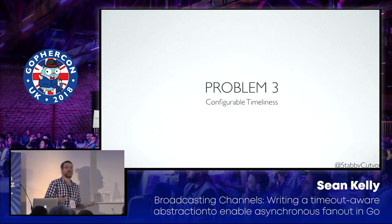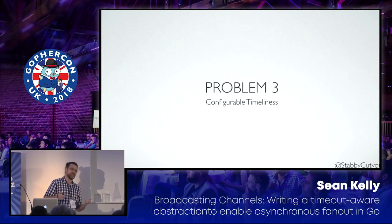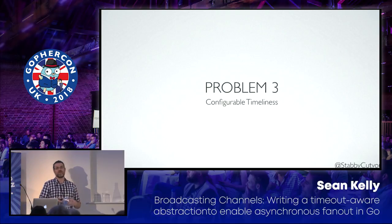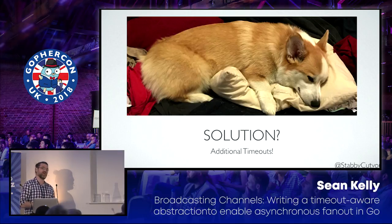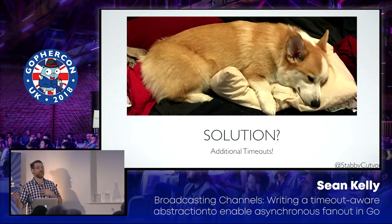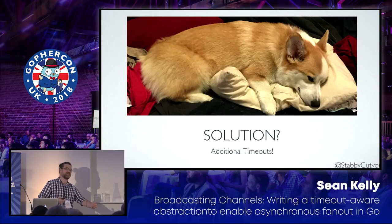But what happens if subscribers don't want that timeout? What if they want every message no matter what, even if it's five hours late? The solution is to let the subscriber provide their own override to the default timeout. The publisher says 'in my opinion, if you get a message later than three seconds it's not worth it,' but the subscriber can say 'I want messages within one second' or 'I want messages within ten seconds.' Both are perfectly valid — you just allow subscribers, once they subscribe, to declare their own expected delivery window.